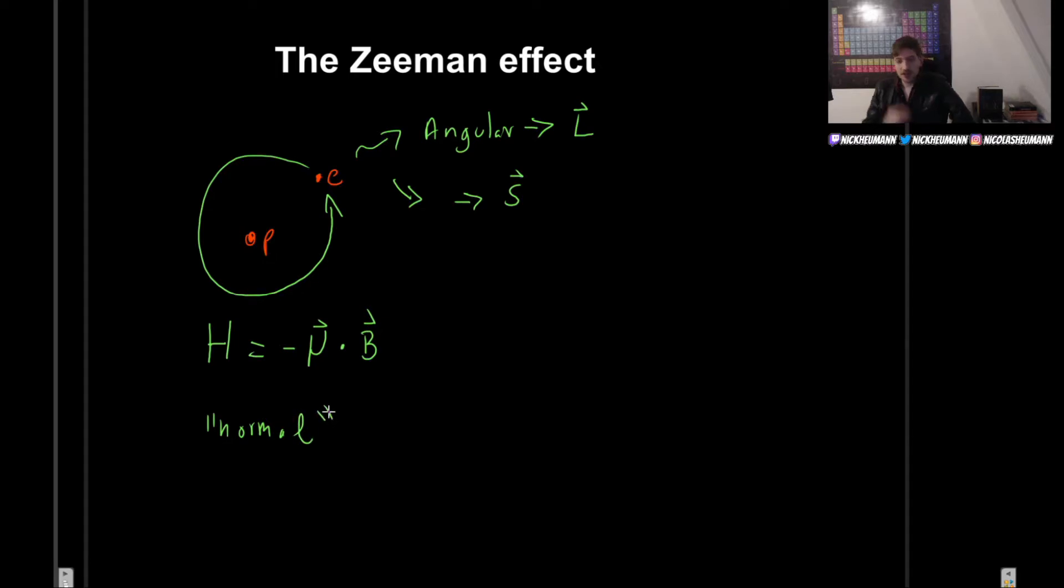And whenever you see the normal Zeeman effect, what they say is that we take the spin to be zero. So basically we only take the angular momentum and not the spin.